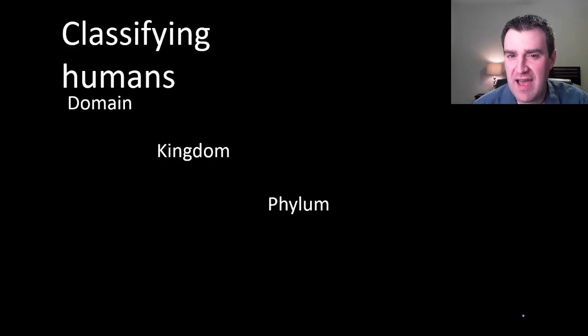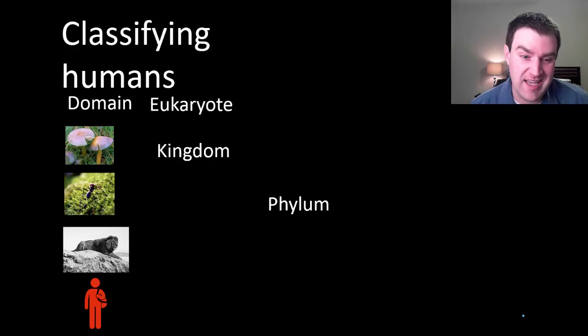Just to give you an example of how that helps us classify, what if we think about our own classification? Which groups do we belong to as humans? We're considered eukaryotes, but lots of other organisms are too, like mushrooms, ants, lions, among many others.